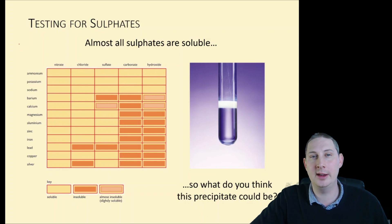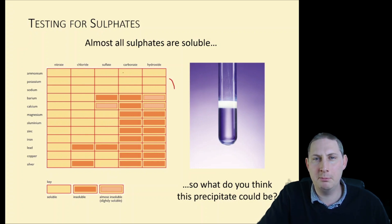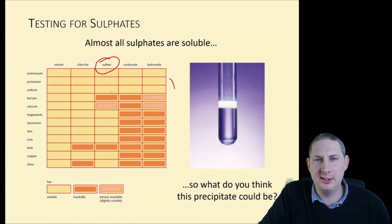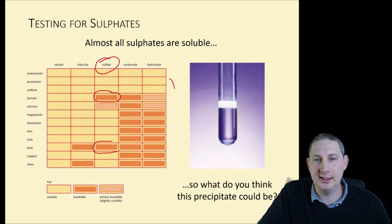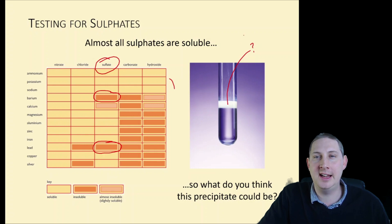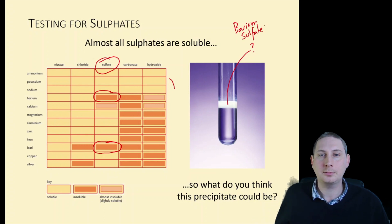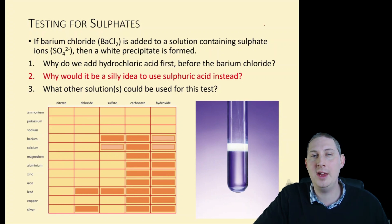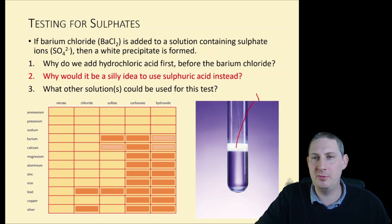The next anion is how to test for sulfates. Most sulfates are soluble, with a few exceptions: barium sulfate is insoluble, calcium sulfate is slightly soluble, and lead sulfate is insoluble. Since we're not going to let you play with lead in the lab, the precipitate used will be barium sulfate. If barium chloride is added to a solution containing sulfate ions, a white precipitate of barium sulfate is formed.